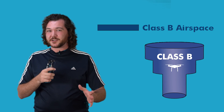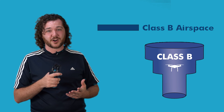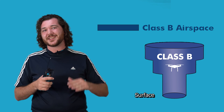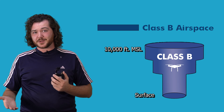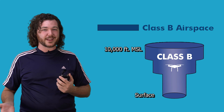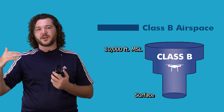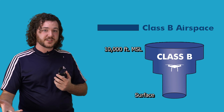Class B airspace is a little more complex than Class A, and it's usually found around large airports. Class B airspace is denoted by a thick, solid blue line on sectional charts, and will typically run from the surface to 10,000 feet MSL. The shape of the airspace depends on the location, but they typically look like an upside-down wedding cake with different tiers starting at different heights, all marked MSL.